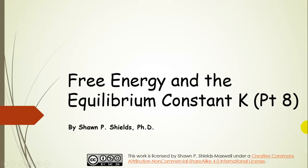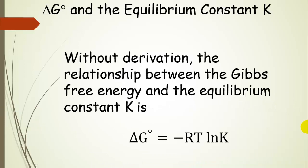Free energy and the equilibrium constant K. We're going to finish up our discussion of free energy, and we need to talk about the equilibrium constant and its relationship with delta G naught. Without deriving this, the relationship is: delta G naught equals negative R — that's the gas constant, 8.314 joules per mole Kelvin — times temperature, multiplied by the natural log of the equilibrium constant.